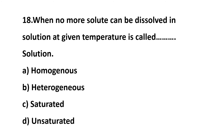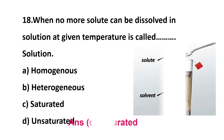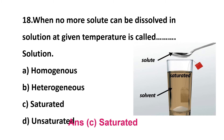Question 18: when no more solute can be dissolved in a solution at a given temperature, it is called a __ solution — option A: homogeneous solution, option B: heterogeneous solution, option C: saturated solution, option D: unsaturated solution. The correct answer is option C: saturated solution, because the solvent can dissolve only a particular amount of solute. For example, if you take 100 ml of water and add 20 spoonfuls of salt, it will not dissolve — that is a saturated solution.